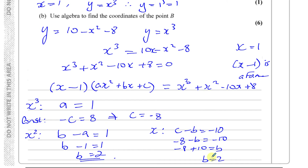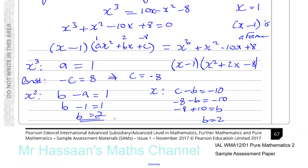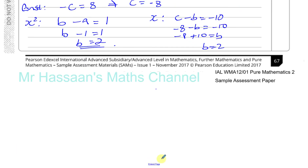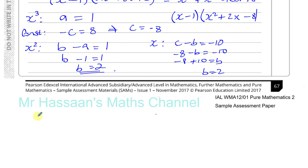So we've found a equals 1, b equals 2, and c equals minus 8. This means x cubed plus x squared minus 10x plus 8 factorises as x minus 1 times x squared plus 2x minus 8, equals 0.